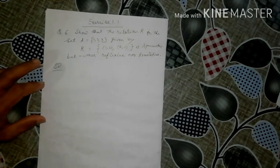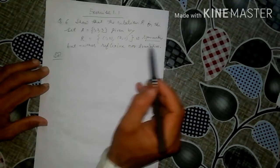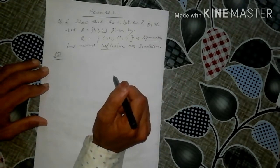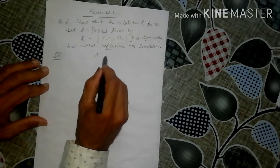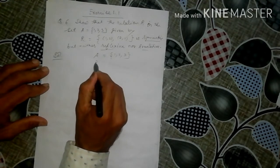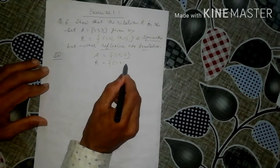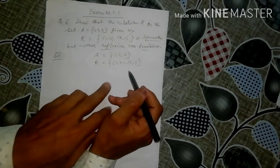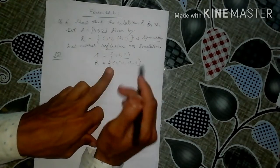Relation R in the set A is given. We need to show it is symmetric but neither reflexive nor transitive. What is given? The set A = {1, 2, 3} and the relation R = {(1,2), (2,1)}. These two elements form a subset of A cross A.